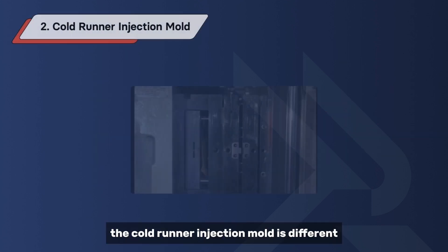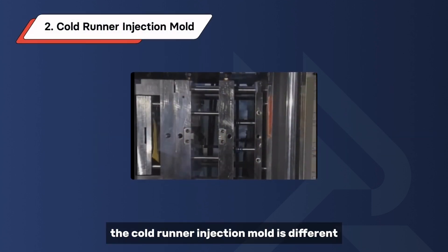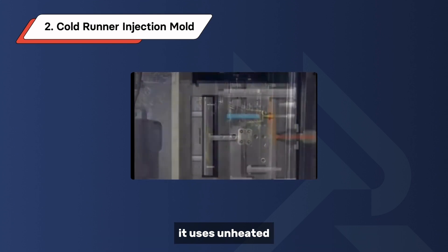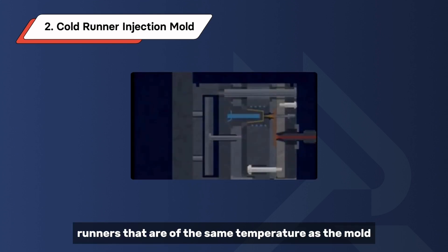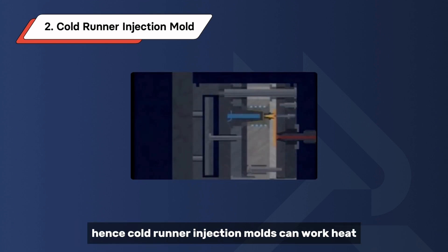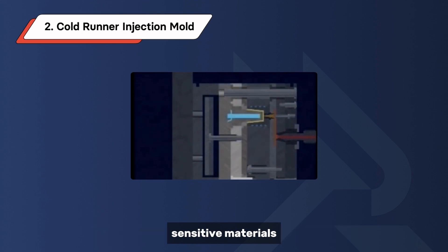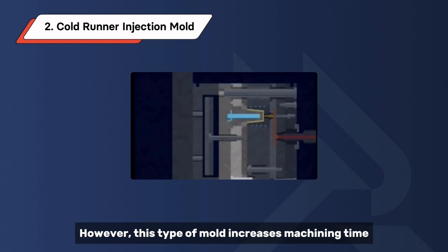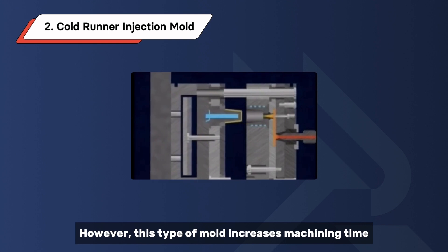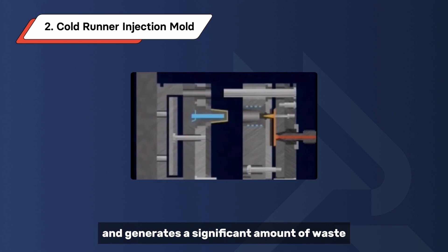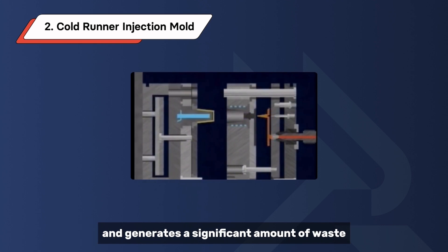The cold runner injection mold is different. It uses unheated runners that are of the same temperature as the mold. Hence, cold runner injection molds can work with heat-sensitive materials. However, this type of mold increases machining time and generates a significant amount of waste.